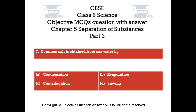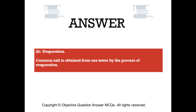Question number 7. Common salt is obtained from sea water by. Option A: Condensation. Option B: Evaporation. Option C: Centrifugation. Option D: Sieving. The right answer is Option B — Evaporation. Common salt is obtained from sea water by the process of evaporation.